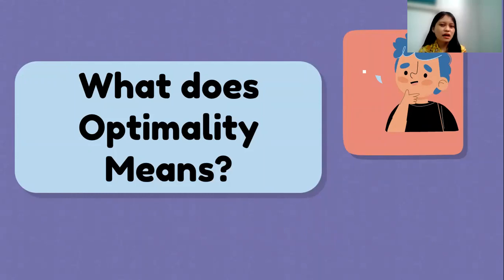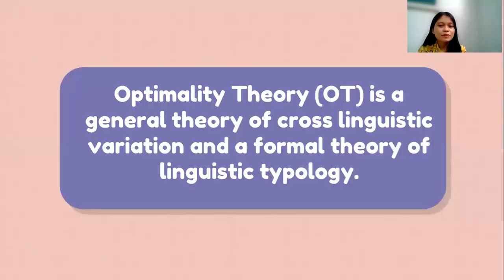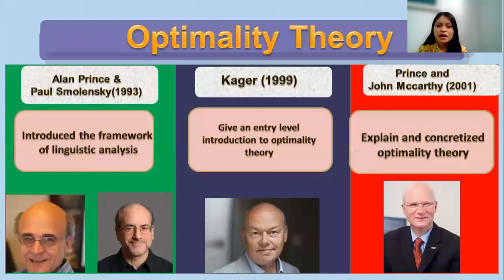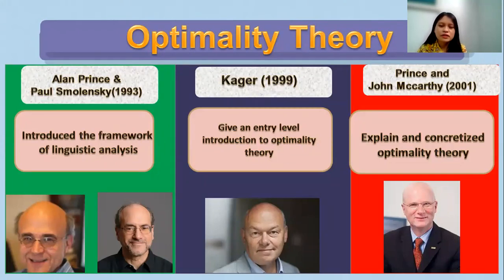So what does optimality theory mean? Basically, optimality theory, abbreviated as OT, is a general theory of cross-linguistic variation and a formal theory of linguistic typology. Optimality theory, or OT, was founded and introduced by Alan Prince and Paul Smolensky in 1993. They introduced the framework of linguistic analysis.